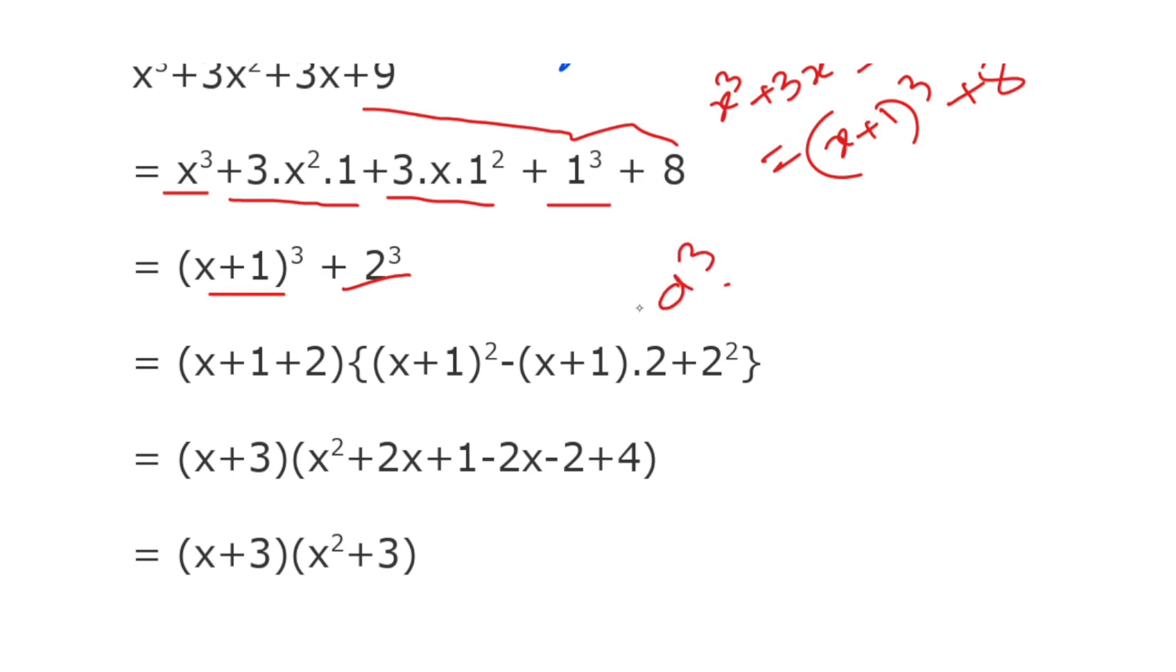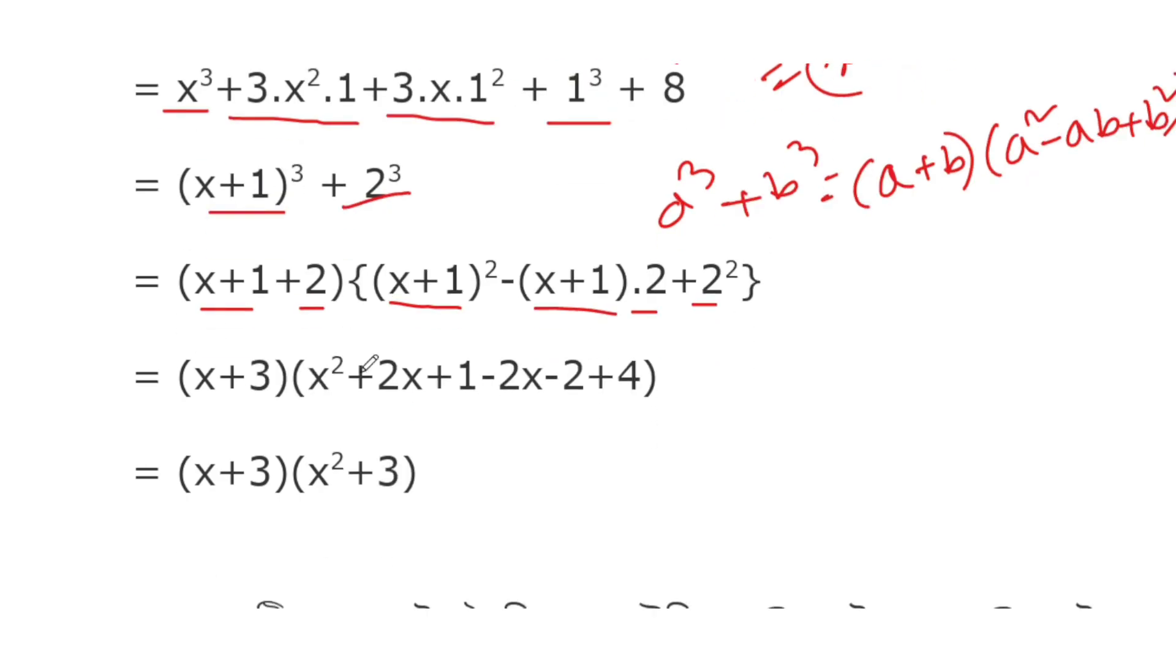Applying the formula: (x+1+2) times ((x+1)²-(x+1)·2+2²). This becomes (x+3) times the remaining expression.